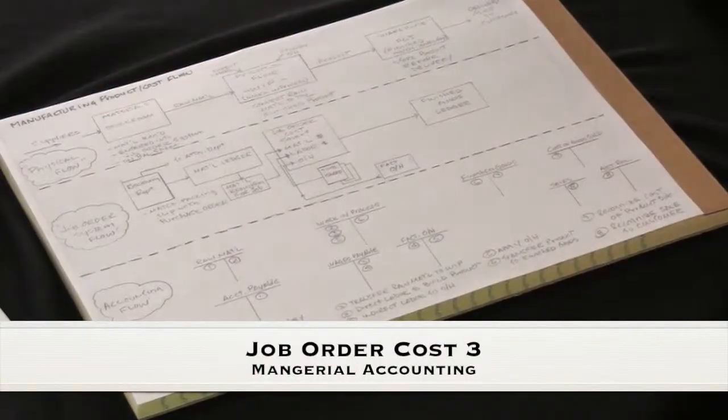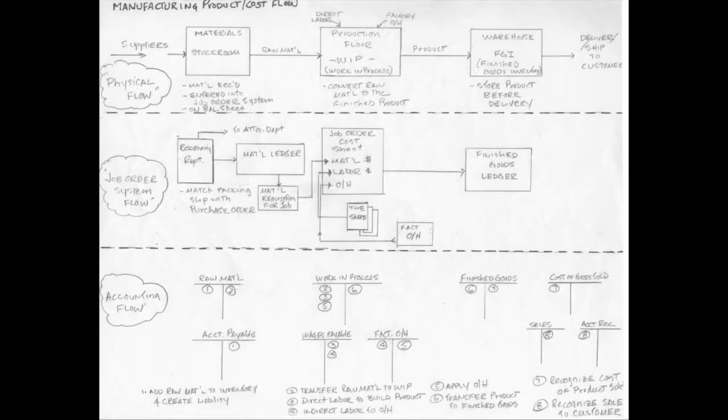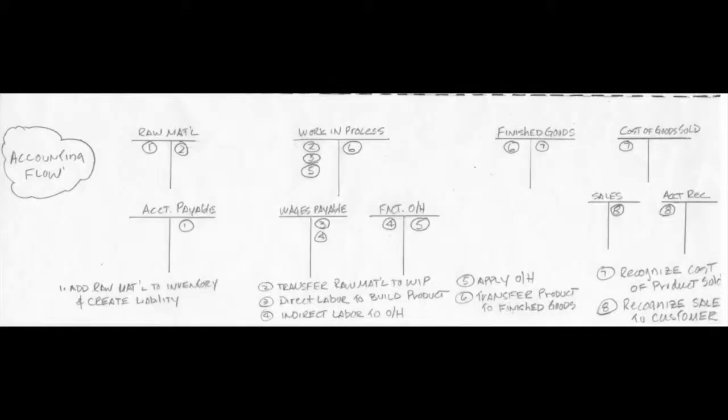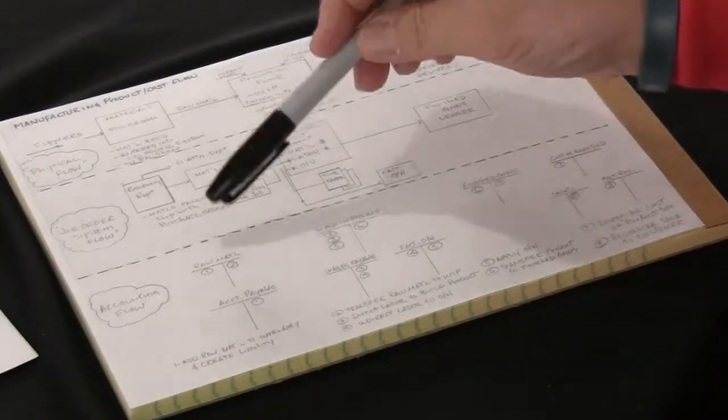Our physical flow in the job order costing system mirrors that physical flow. You cannot escape debits and credits — I know you're all going into some kind of seizure at the moment, but there is a financial accounting flow. I've attempted to demonstrate this in the form of T-accounts. The left side is the debit side, the right side is the credit side. Why they call it that — the only thing I can think of is left was already taken and right was already taken, so they called it debit and credit. That was a joke, by the way.